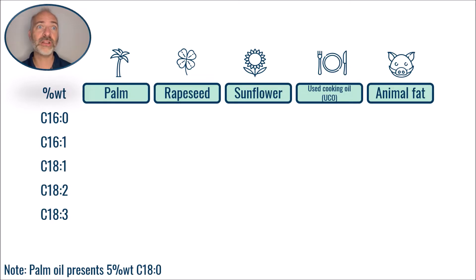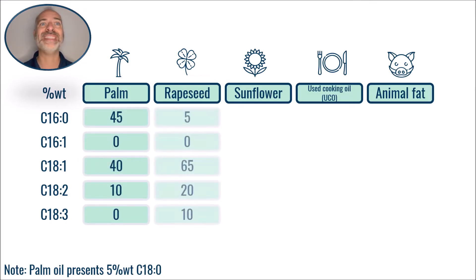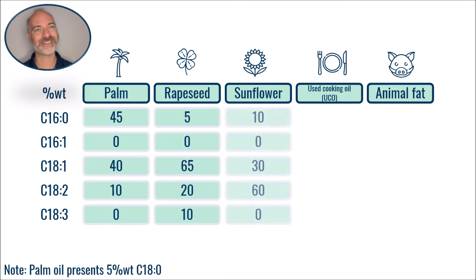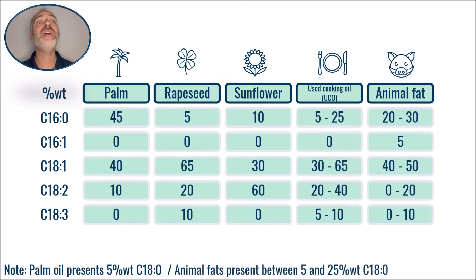Palm oil consists of half saturated C16 — palmitic acid — and half unsaturated C18, while rapeseed is mainly made up of C18, about 95% weight, just like sunflower. Regarding animal fats and used cooking oils, their qualities can vary greatly depending on their origin.